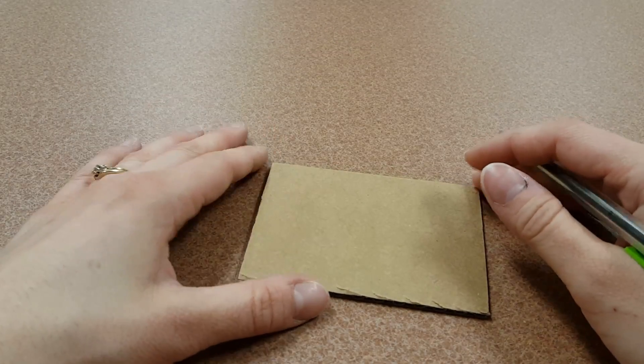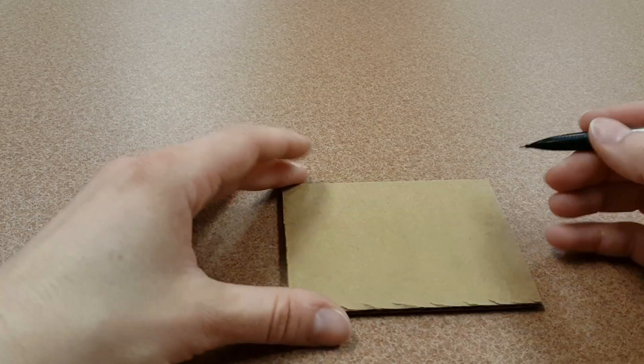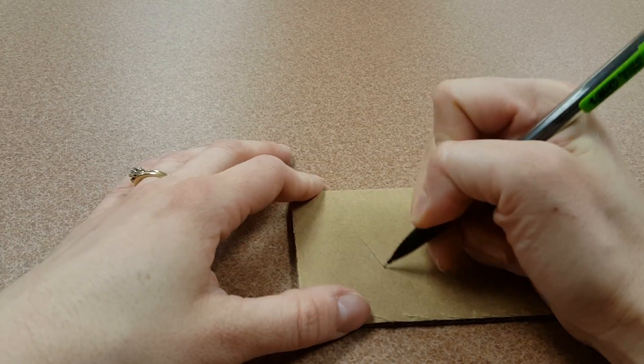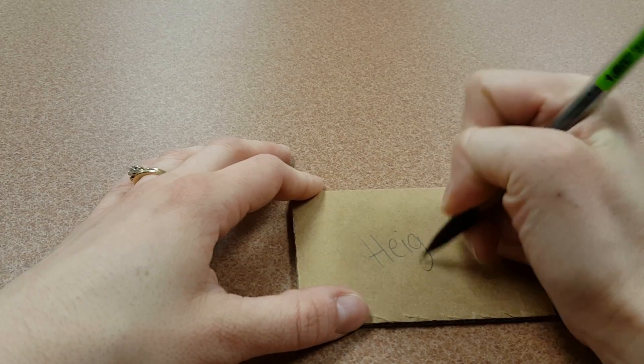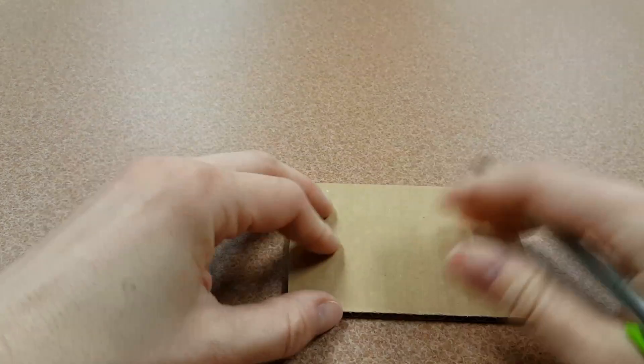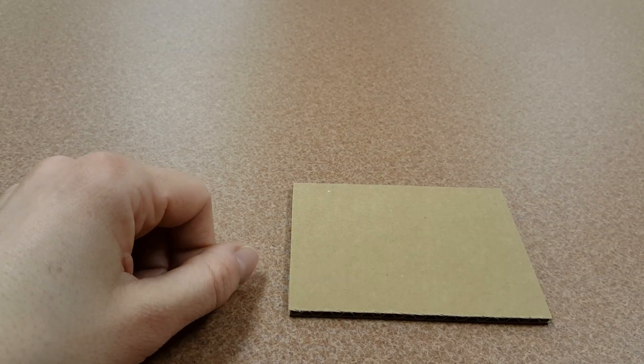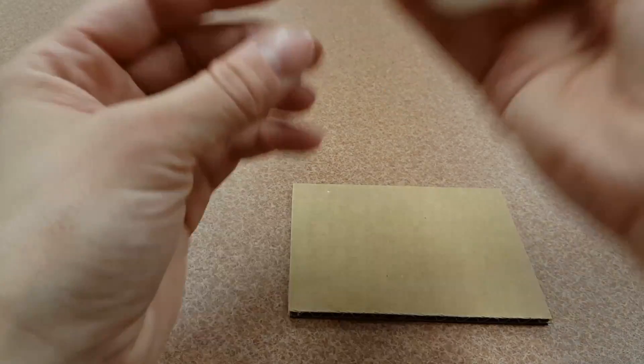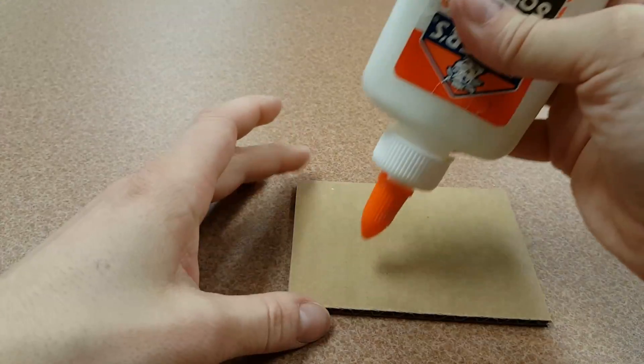Today we're going to make a printing block from cardboard and yarn. The first thing I need you to do is write your name on your cardboard, flip it over, then we're going to take glue and one line at a time draw a design.